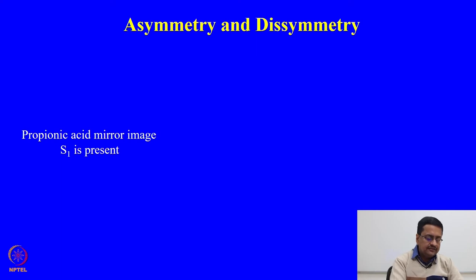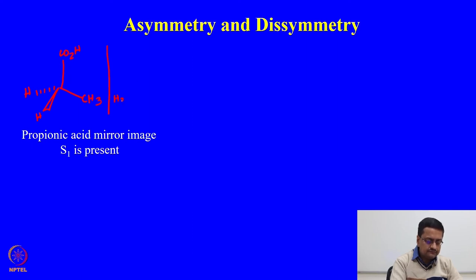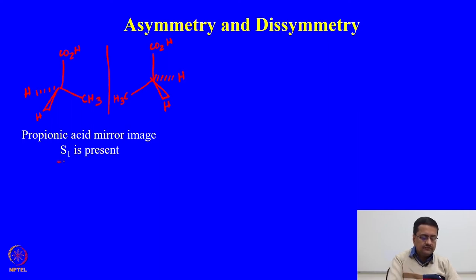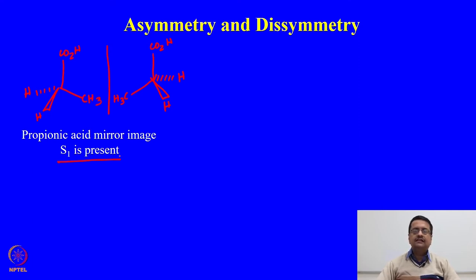The first example is propionic acid and its mirror image. Propionic acid is a 3-carbon acid with a CH₂ in between, and the corresponding mirror image can be drawn. What we see here is that this molecule has an S_1 axis present, and as a result this molecule is a symmetric molecule. Although it does not have any C_n greater than 1 — it has C_1 of course.